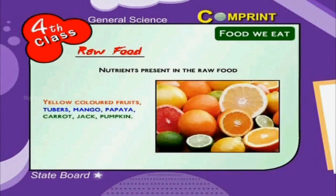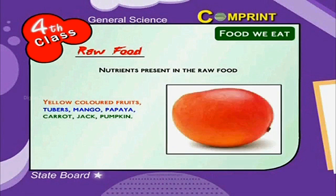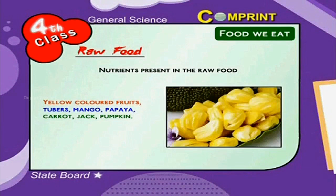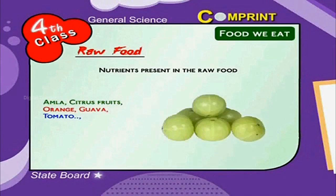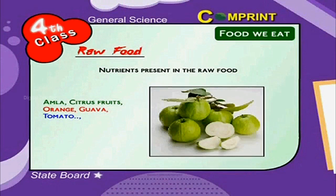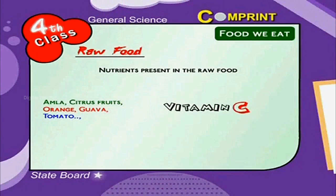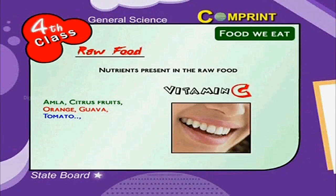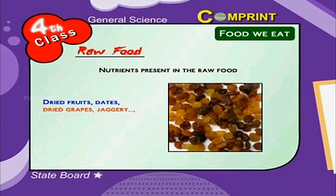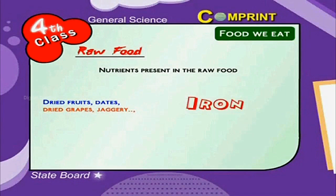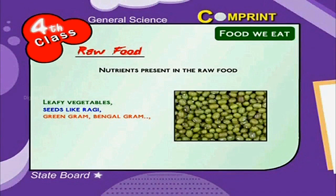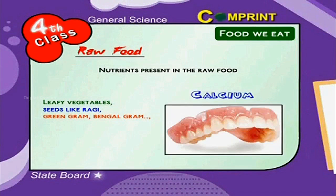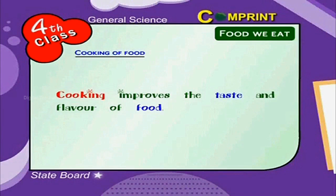Look at the table for nutrients present in raw foods. Yellow colored fruits and tubers like mango, papaya, carrot, jackfruit, and pumpkin contain Vitamin A for healthy eyes and skin. Amla, citrus fruits, orange, guava, and tomato have Vitamin C for healthy skin and gums. Dried fruits, dates, dried grapes, and jaggery have iron to keep the blood red. Leafy vegetables and seeds like ragi, green gram, and Bengal gram contain calcium for strong bones and teeth.